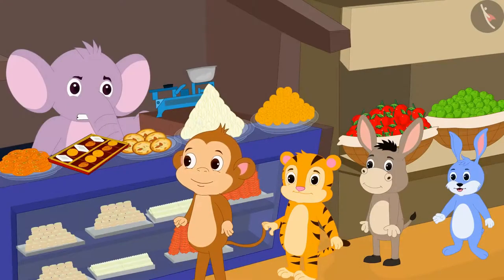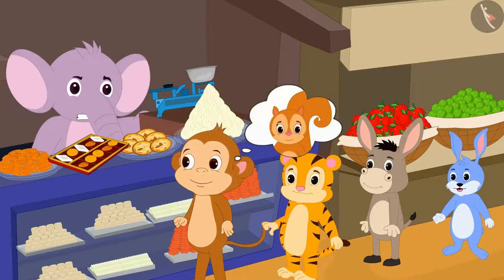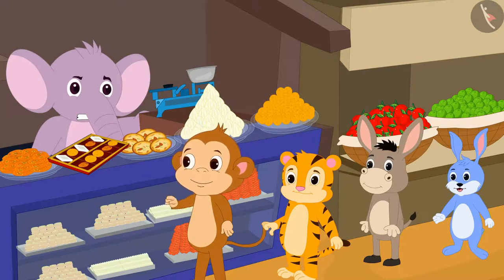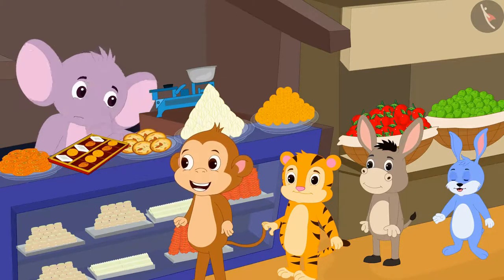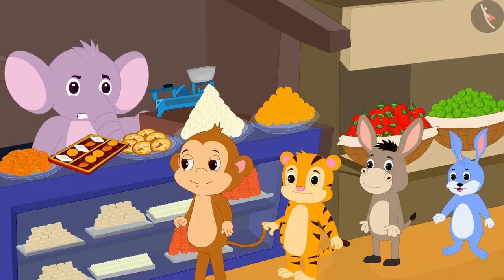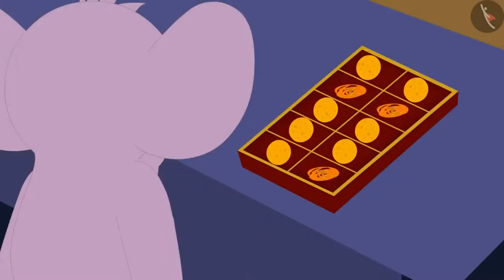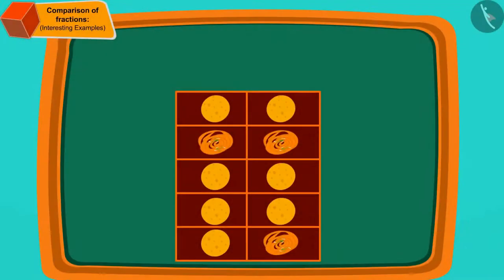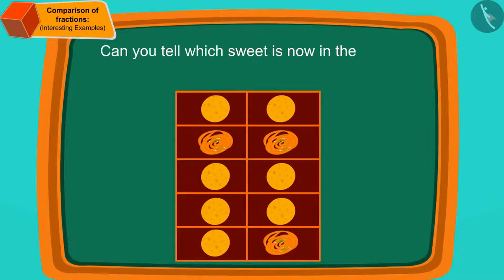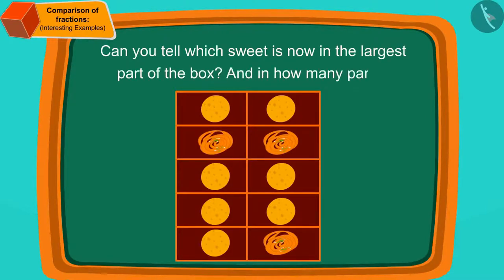Babban remembered that Chanda loved laddus, so he asked Appu to fill laddus in the parts where kaju katli was filled. Now Appu started getting angrier, but still he filled laddus instead of kaju katli. Can you tell which sweet is now in the largest part of the box, and in how many parts? You can stop the video and find the answer.